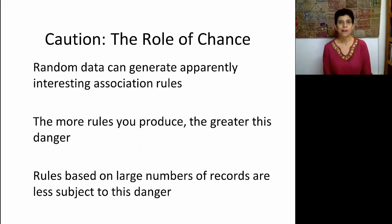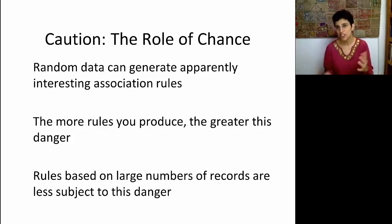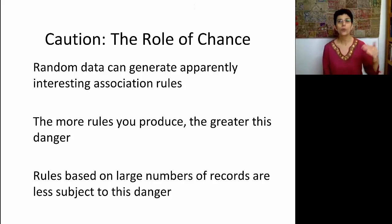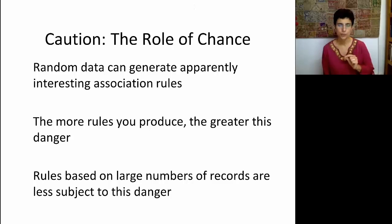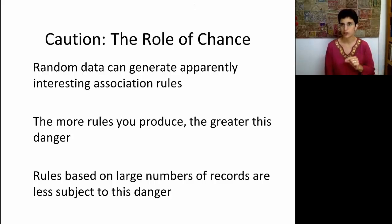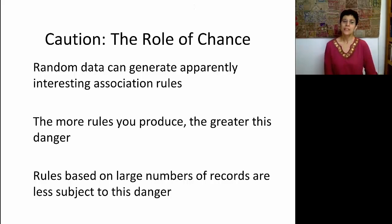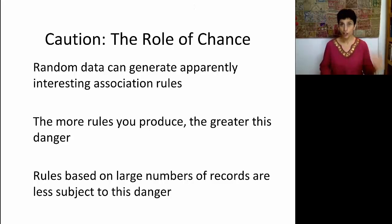There's still a problem of finding random rules that appear by chance, because we're working with lots of rules and some will still pass through our filters. The more rules you produce, the riskier it becomes. You want to reduce the number of rules by setting thresholds high, but also by using domain knowledge to focus only on items or combinations that matter operationally. You also want to use as many records as possible, since rules based on larger numbers of transactions are less likely to result from chance.